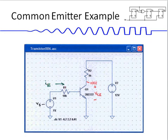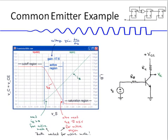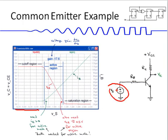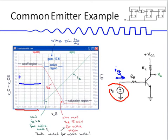The plot shows a cutoff region to the left, where the source voltage is significantly below 0.7 volts. In this region there is no base current ib flowing — ib is approximately zero — so the transistor is cut off. This means no current flows from the collector to the emitter, there is no voltage drop across rc, and the output vc stays at Vcc, shown as the red line at the top.